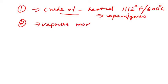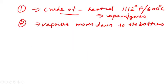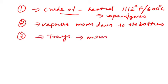The vapors move down to the bottom of the column. Third step: the trays at the bottom have holes that allow the movement of vapor. At the bottom of the column there are trays, and these trays help the movement of the vapor.